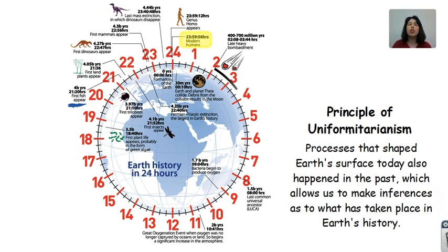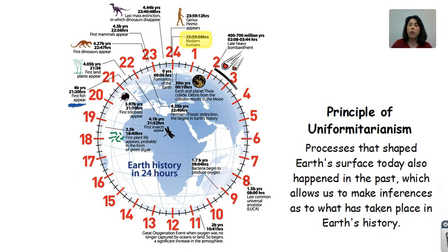So the processes that are shaping the Earth's surface today, such as plate tectonics and all those tectonic activities, and surface processes such as the agents of erosion with running water and glacial processes — those processes that have shaped the Earth today also happened in the past. Making observations about those factors right now allows us to make inferences about what happened in the past, because none of us were around when some of these things happened. None of us are 4.6 billion years old — that's really old.